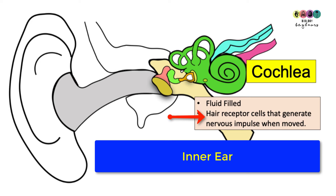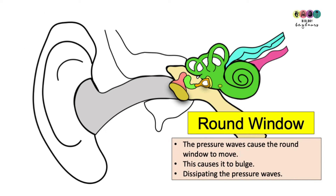Inside the cochlea are special hair-like receptor cells that, when they move, generate a nervous impulse. Once the vibrations enter the cochlea through the oval window, they form pressure waves, and those pressure waves are dissipated out of the cochlea through the round window.